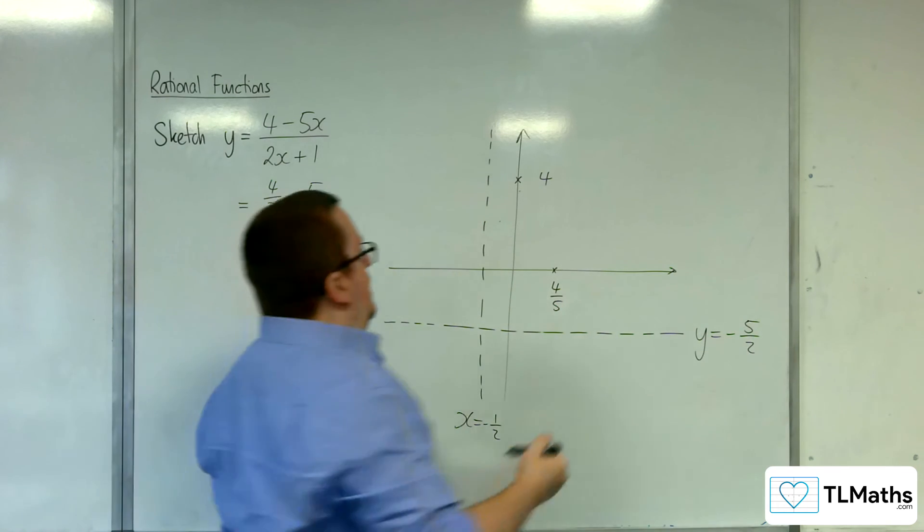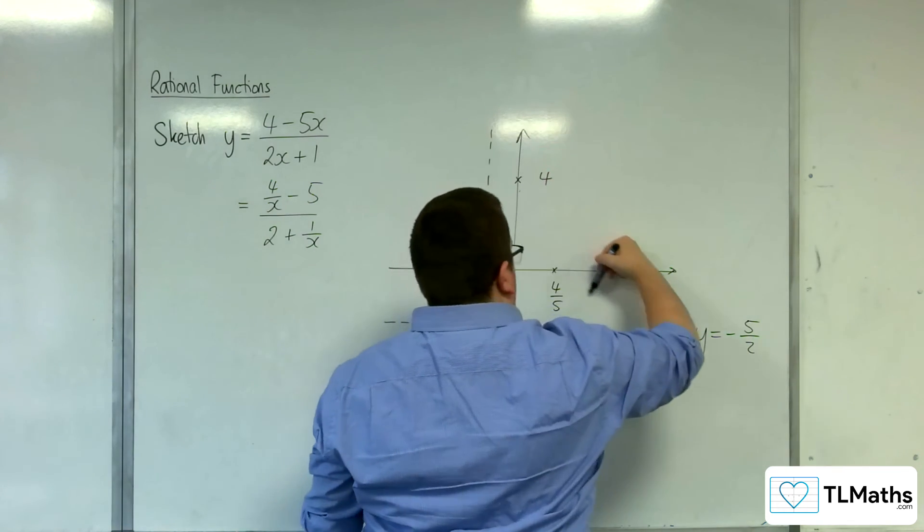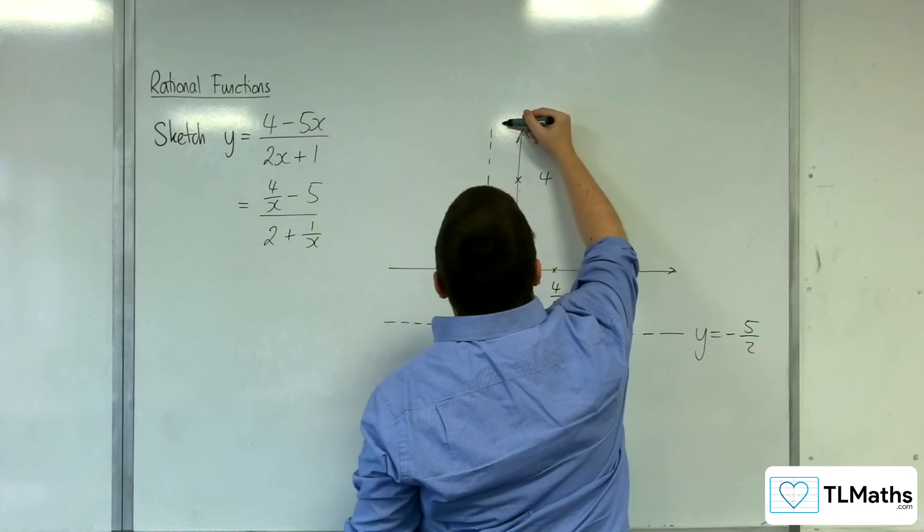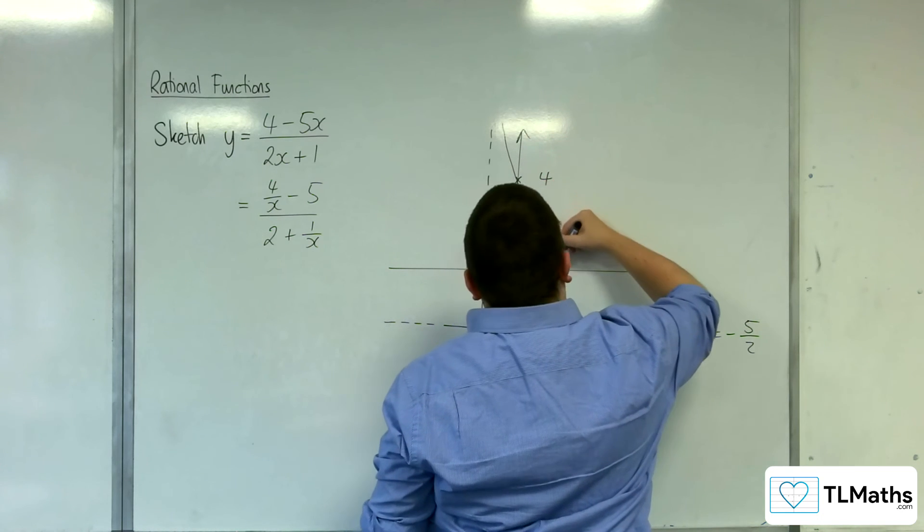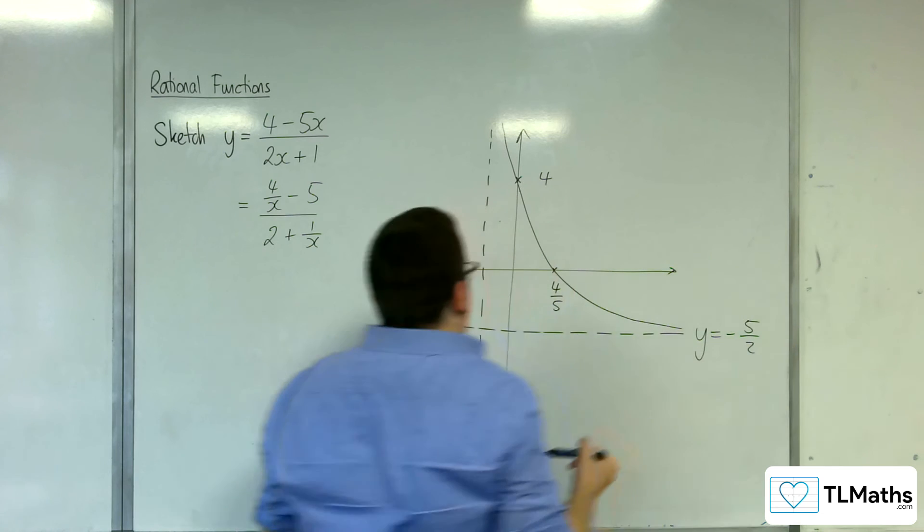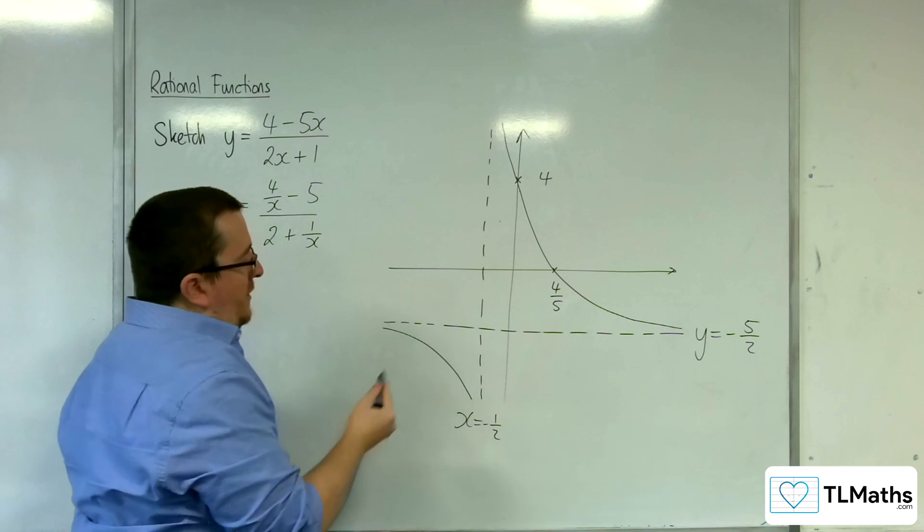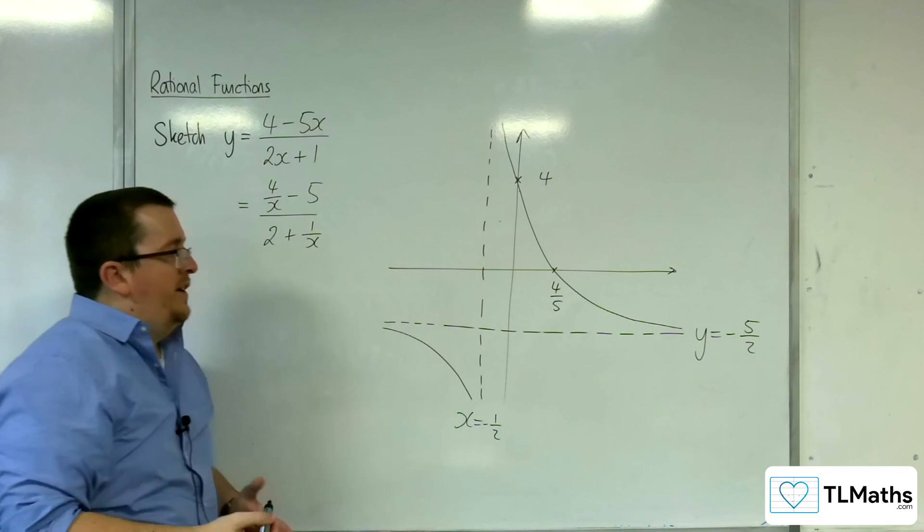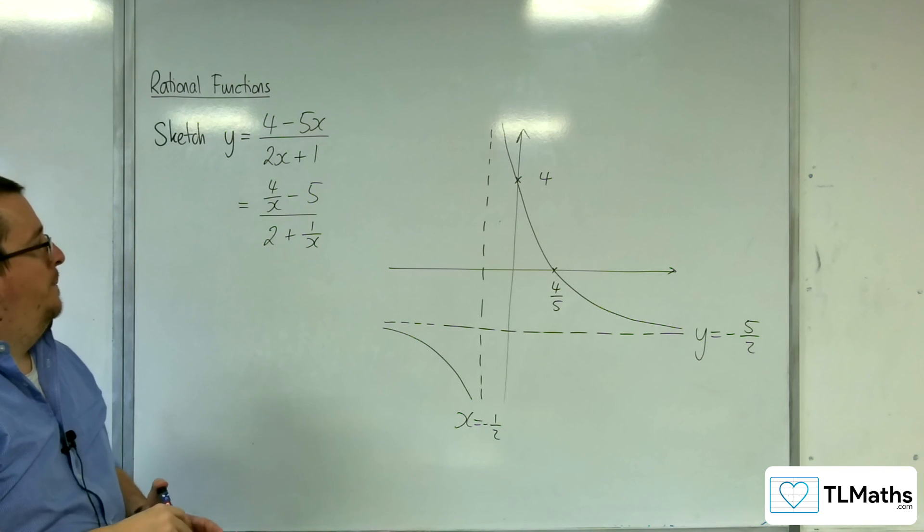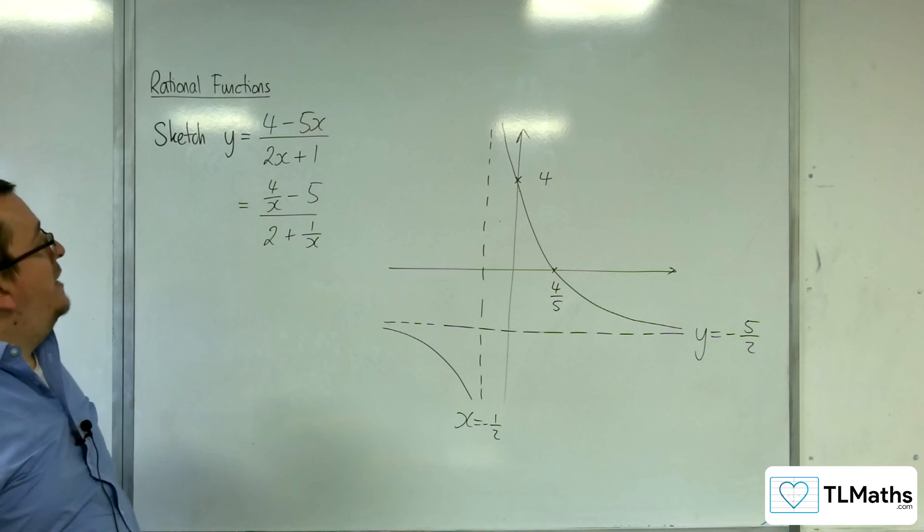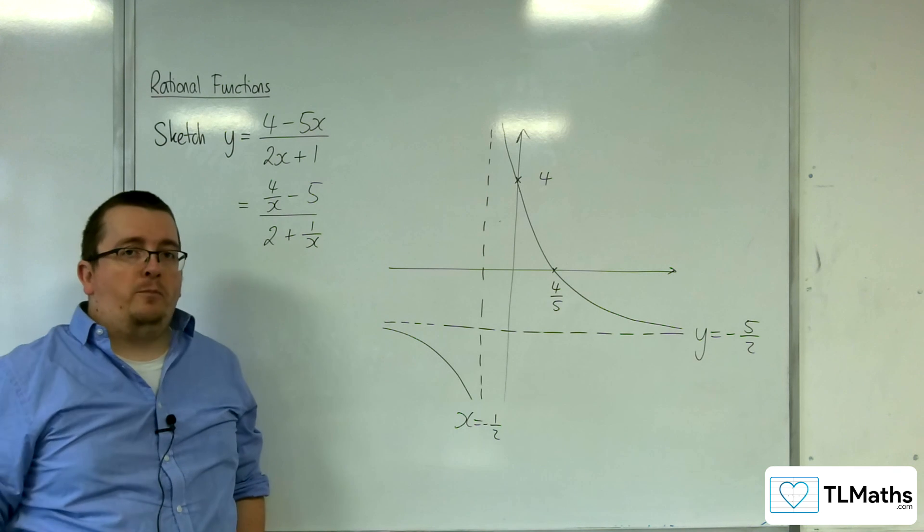And so our curve must go through those two points and tend towards those two asymptotes. Like that. And the rest of the curve must be down here. Because we can't cross the x-axis again. So it's got to be tending towards the two asymptotes that way. So that's how we can sketch y equals 4 take away 5x over 2x plus 1.